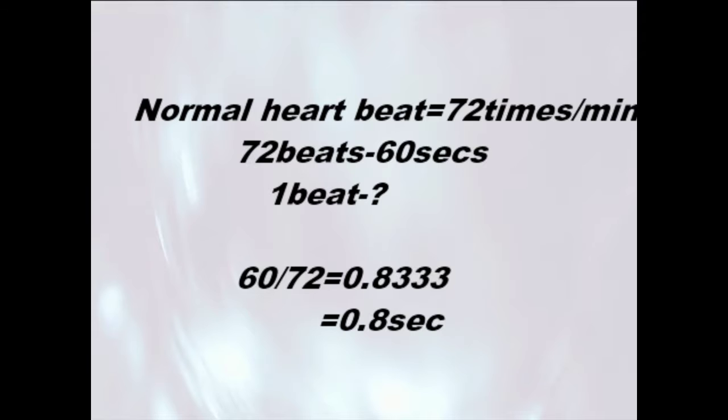Now coming to the timings in cardiac cycle. We know that normal heartbeat is 72 times per minute. Then what is the time taken for one single beat? We cross multiply and get 0.8333. On average, we take it as 0.8 seconds, so for each cardiac cycle, the time taken is 0.8 seconds.